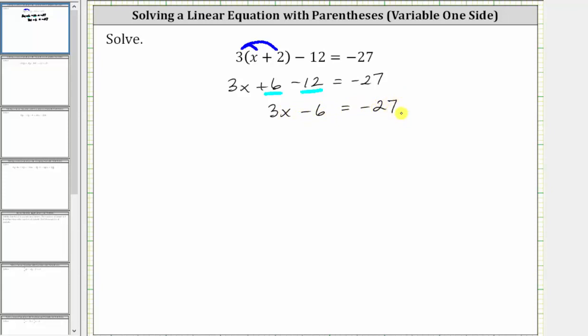The next step is to add or subtract to isolate the variable term. Notice how the variable term is on the left side. We need to undo the minus six, and therefore, to undo the minus six, the next step is to add six to both sides of the equation.